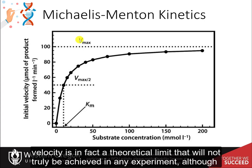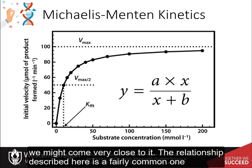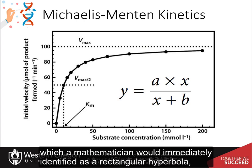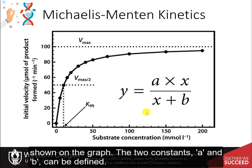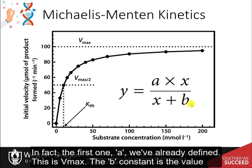At this point, the enzyme is considered to be coming close to saturation with the substrate and is demonstrating its maximal velocity, or Vmax. Note that this maximal velocity is in fact a theoretical limit that will not truly be achieved in any experiment, although we might come very close to it. The relationship described here is a fairly common one, which a mathematician would immediately identify as a rectangular hyperbola. The equation that describes such a relationship is shown on the graph. The two constants, a and b, can be defined.